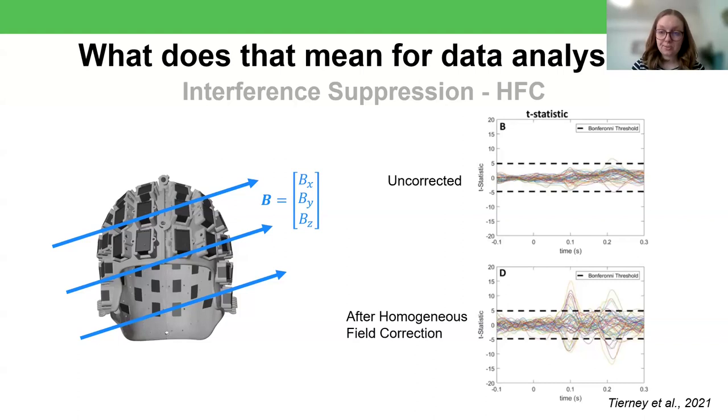You might also see homogeneous field correction, or HFC, talked about. So this is related to AMM and SSS, in that it still models the external space. But rather than modeling both the internal and external spaces and keeping the internal space, in HFC you only model the external space and then regress that out of the data. And at least in its original form, the H, the homogeneous part, means that the field is the same across the brain. So for every position it's defined by three components, BX, BY, and BZ. This is more conservative than AMM. If you have enough sensors, we generally recommend AMM. But if you don't have the sensor number required for the spatial modeling of AMM, HFC can be a really successful alternative.